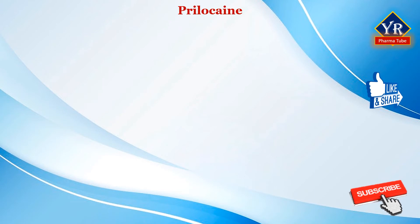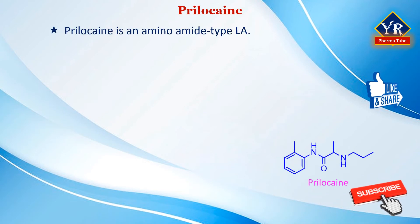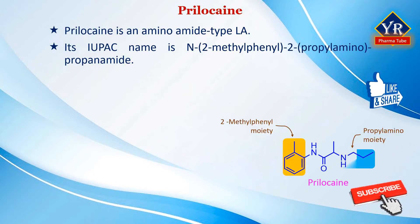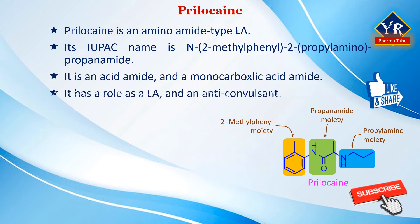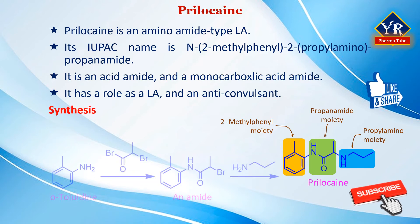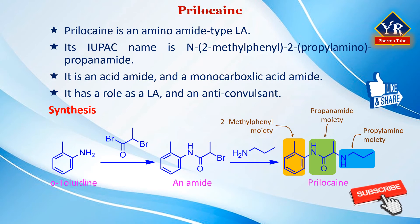The next drug is prilocaine. Prilocaine is an aminoamide type local anesthetic. Its IUPAC name is N-2-methylphenyl-2-propylaminopropanamide. It is a toluidine derivative and an intermediate-acting local anesthetic. It has only one ortho substitution on the aromatic ring, making it more susceptible to amide hydrolysis and giving it a shorter duration of action than lidocaine. It is an amino acid amide in which N-propyl-DL-alanine and 2-methylaniline have combined to form the amide bond. Prilocaine is synthesized from orthotoluidine, which is condensed with 2-bromopropanoyl bromide to form an amide, which upon reaction with propylamine gives prilocaine.